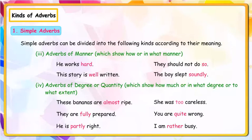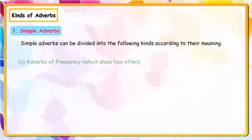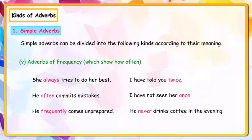Adverbs of degree or quantity, which show how much, or in what degree, or to what extent: These bananas are almost ripe; She was too careless; They are fully prepared; You are quite wrong; He is partly right; I am rather busy. Adverbs of frequency, which show how often: She always tries to do her best; I have told you twice; He often commits mistakes.